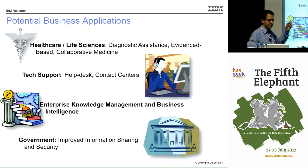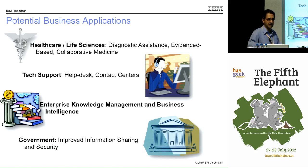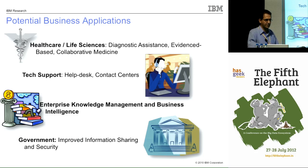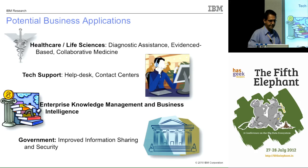Another possible application is technical support — many people answer phones about products people have bought, and Watson could potentially automate this. There are also enterprise knowledge management challenges: search inside enterprises works far more poorly than Google because there's less duplication of information. If you use the wrong keyword inside an enterprise system, you find nothing; on Google, some other page using that keyword would appear. Search inside enterprises is a potential application area.